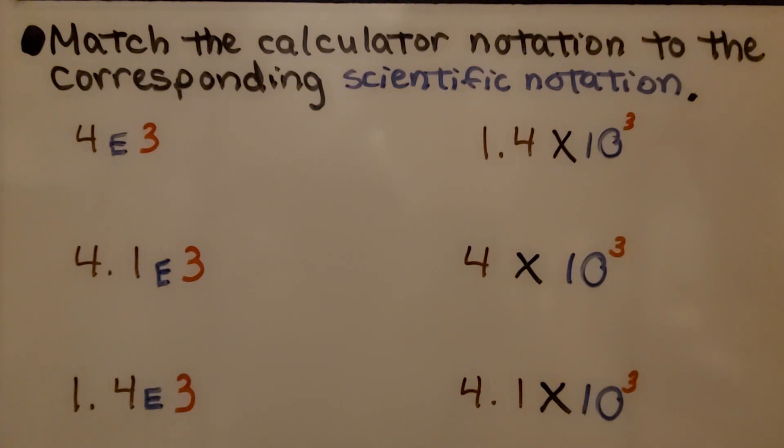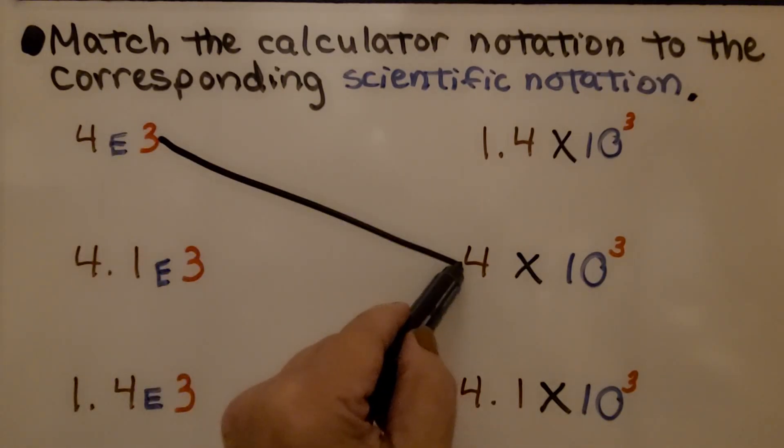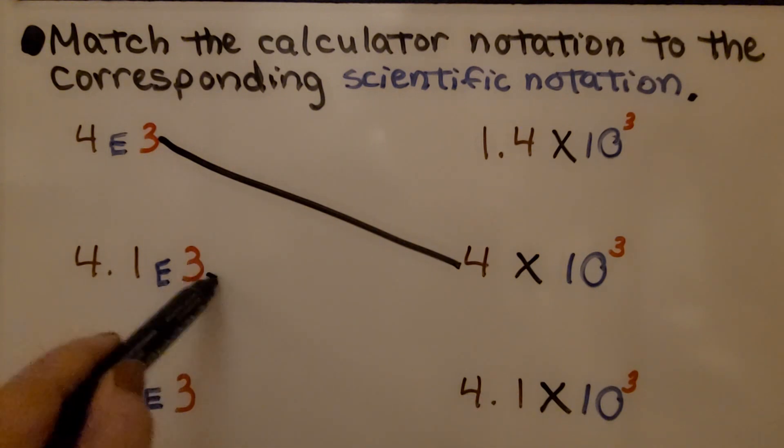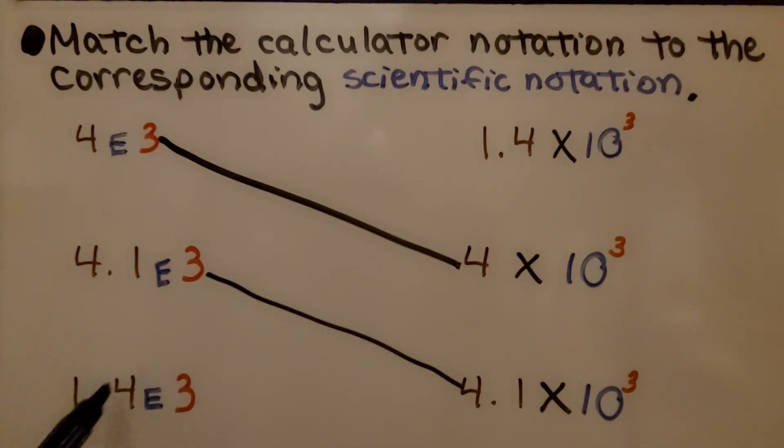Here it's telling us to match the calculator notation to the corresponding scientific notation. Our first one is 4E3. So we don't have a decimal point. It must be this one. Here we have 4.1E3. Well, 4.1 would be this one. That leaves 1.4E3 to be 1.4 times 10 raised to the 3rd power. Remember, this capital E is taking the place of times 10.